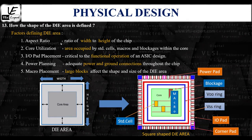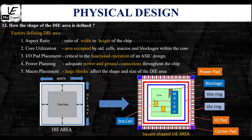The next factor is core utilization, which defines the area occupied by standard cells, macros, and blockages within the core. It is expressed as a percentage indicating how much of the core area is occupied by components versus how much is left for routing. For example, a core utilization of 0.8 means 80% of the core area is used for placement of standard cells, macros, and blockages, while the remaining 20% is used for routing.